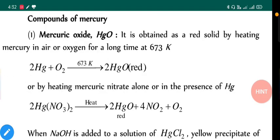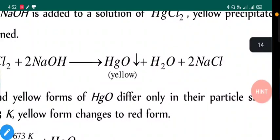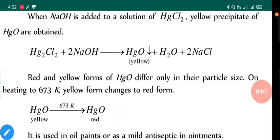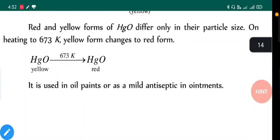Compounds of mercury: First is mercury oxide. It can be obtained as a red solid by heating mercury in air or oxygen for a long time. Simple reaction: Hg + O₂ → HgO (red color). Or by heating mercury nitrate alone or in presence of mercury: Hg(NO₃)₂ in presence of mercury or alone gives HgO and releases NO₂ and O₂ gases. When NaOH is added to the solution of HgCl₂, yellow precipitates of HgO are obtained.